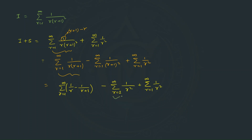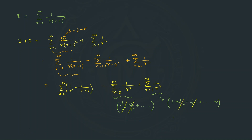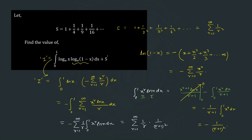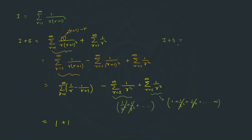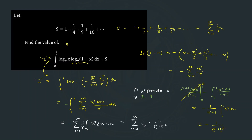Expanding: the series Σ 1/(r+1)² gives 1/2² + 1/3² + ..., while Σ 1/r² gives 1 + 1/2² + 1/3² + .... These terms cancel except for the leading 1. The first part from the 1/[r(r+1)] telescoping sum also gives 1 − 0 = 1. So our final value of I + S equals 1 + 1 = 2. That is our correct answer. I hope you understood the concept behind this question.